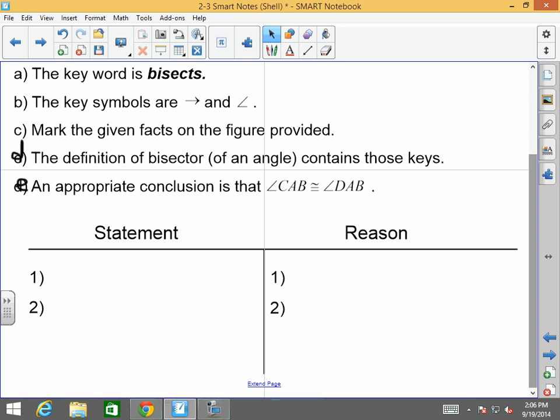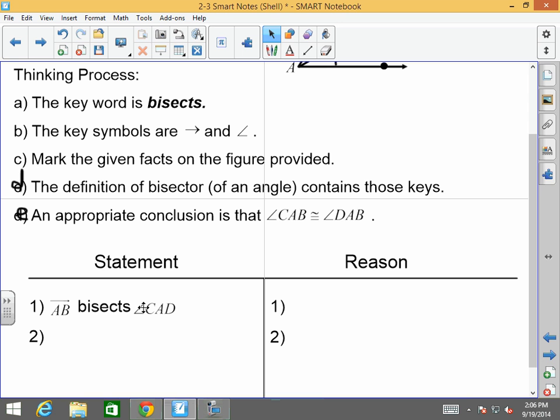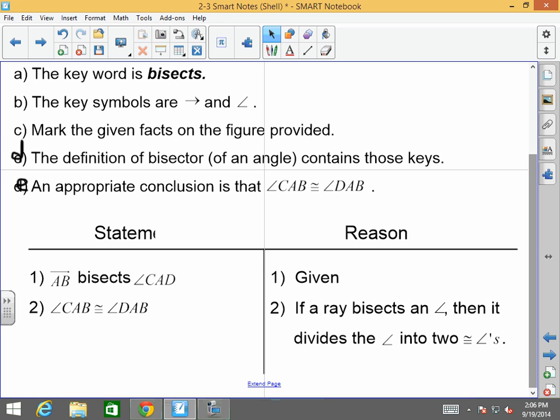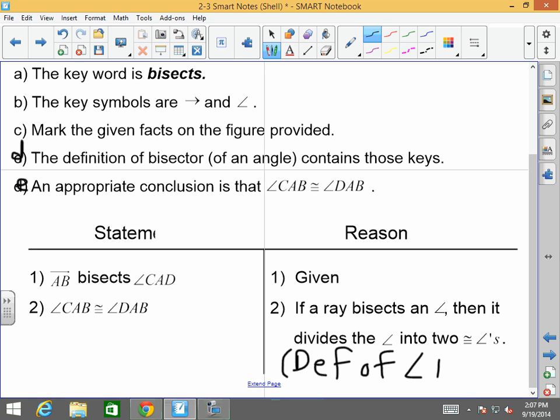And if I was going to make a proof out of this, I would state, of course, ray AB bisects CAD, because that's given. And then CAB is congruent to DAB. Why? Because if a ray bisects an angle, then it divides the angle into two congruent angles, or definition of angle bisector. I would have totally accepted definition of angle bisector. I'm not here to kill you guys. But you've got to know the definition, because if you don't know the definition, you're not going to know how to even abbreviate it. Does that make sense, gentlemen?